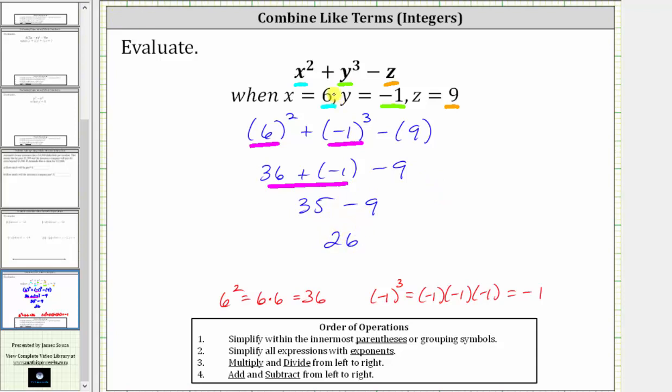The expression x squared plus y cubed minus z is equal to 26 when x equals six, y equals negative one, and z equals nine. I hope you found this helpful.